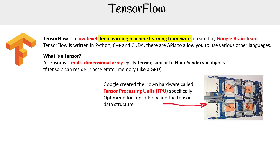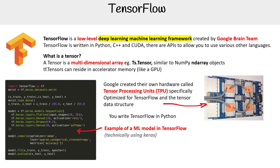Google has actually created their own hardware called a Tensor Processing Unit, specifically optimized for TensorFlow and the tensor data structure. TensorFlow is written in Python. An example of an ML model in TensorFlow is shown here on the left-hand side. Technically, this is Keras — Keras is a high-level abstraction of TensorFlow. It can get a bit confusing initially, the difference between Keras and TensorFlow, but they're essentially the same thing as Keras is packaged with TensorFlow.